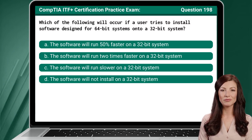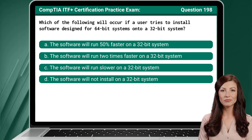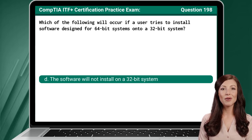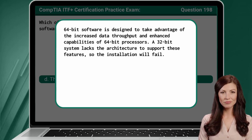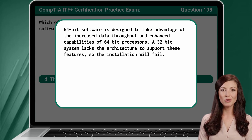Question 198. Which of the following will occur if a user tries to install software designed for 64-bit systems onto a 32-bit system? The answer is D: The software will not install on a 32-bit system. 64-bit software is designed to take advantage of the increased data throughput and enhanced capabilities of 64-bit processors. A 32-bit system lacks the architecture to support these features, so the installation will fail.